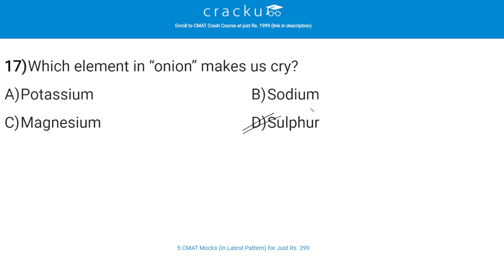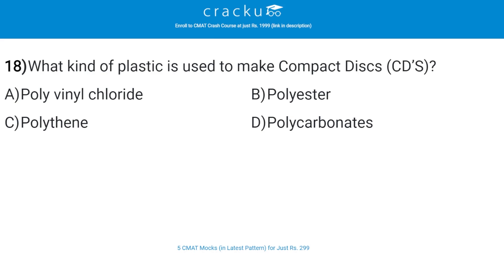What kind of plastic is used to make compact discs (CDs)? The correct answer is D — polycarbonate. A CD consists of three layers: a base layer made of polycarbonate plastic, a thin layer of aluminium coating over the polycarbonate, and a clear protective acrylic coating over the aluminium layer.